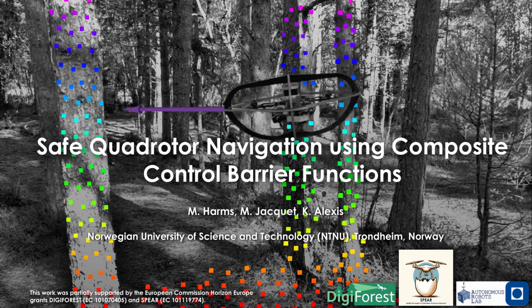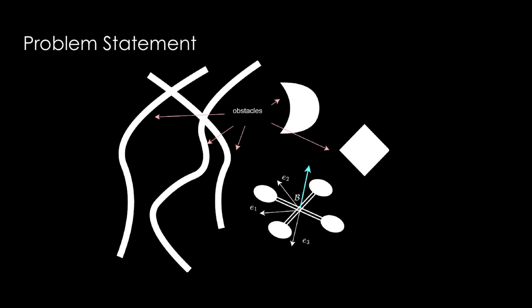In this video, we present safe quadrotor navigation using composite control barrier functions. We consider a multirotor operating in a complex cluttered environment with multiple static obstacles of arbitrary size and shape.